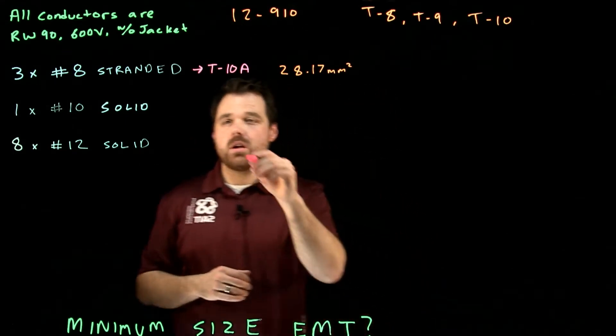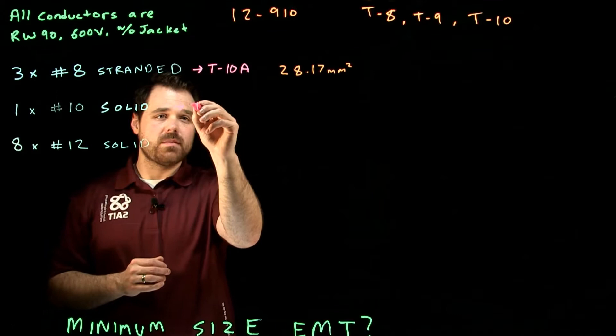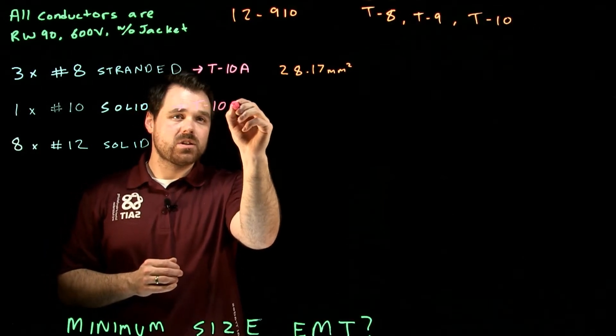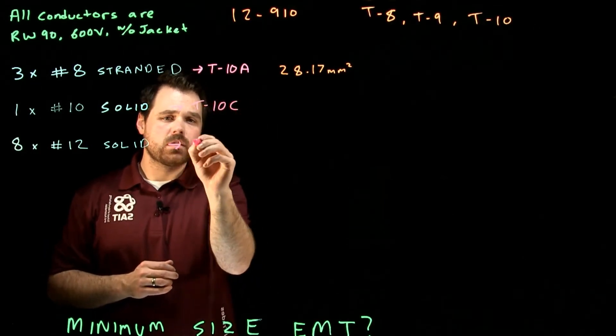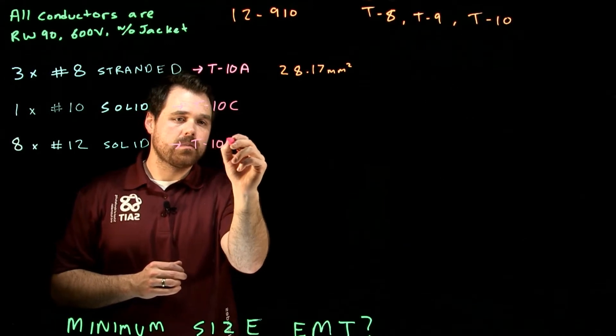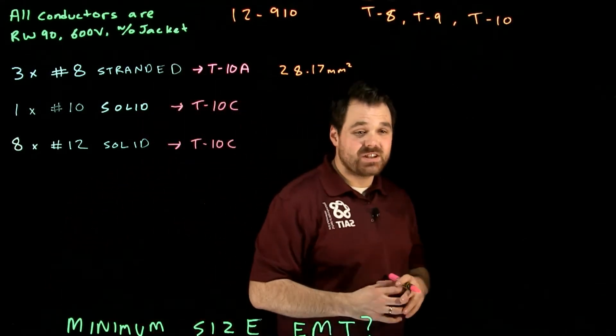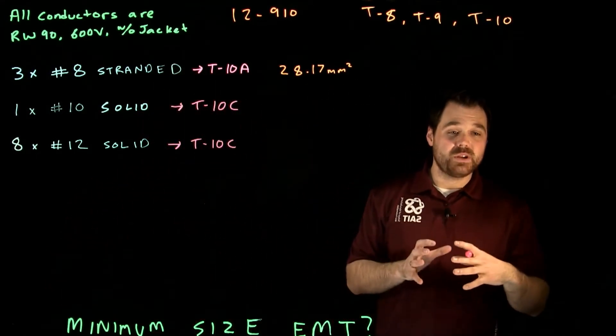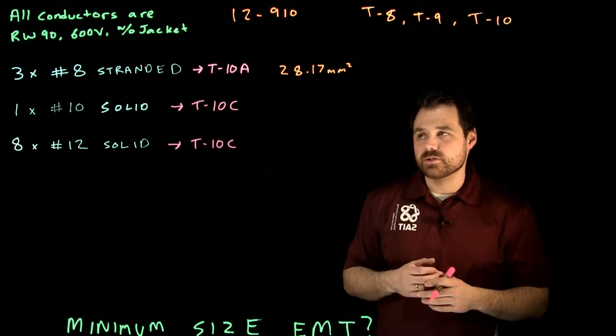For our solid conductors, where we need to go is actually table 10-C. Now table 10-C is going to give us the area in millimeters squared of our solid conductors.